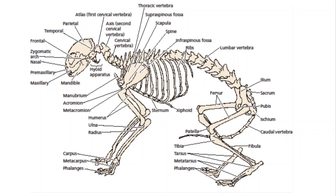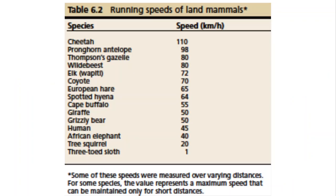We also talked about regionalization of the vertebral column. Reptiles have ribs everywhere, whereas mammals restrict the ribs just to the thoracic region. Mammals divide the trunk vertebrae into thoracic and lumbar. Mammals have more sacral vertebrae because they're generating more power, and more cervical vertebrae for greater head mobility — which is important if you're a more active hunter or trying to avoid predation. And of course they have an upright posture.